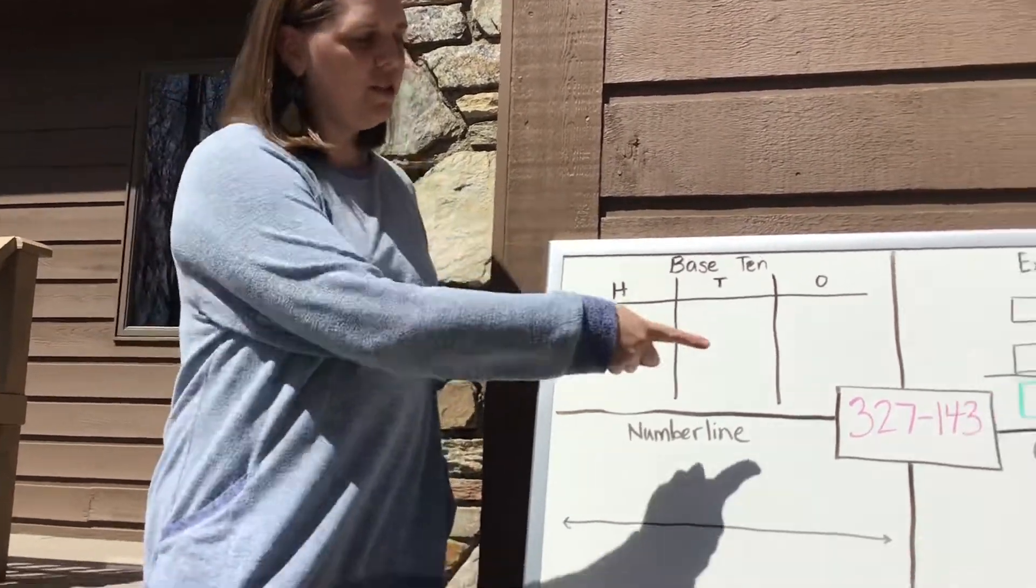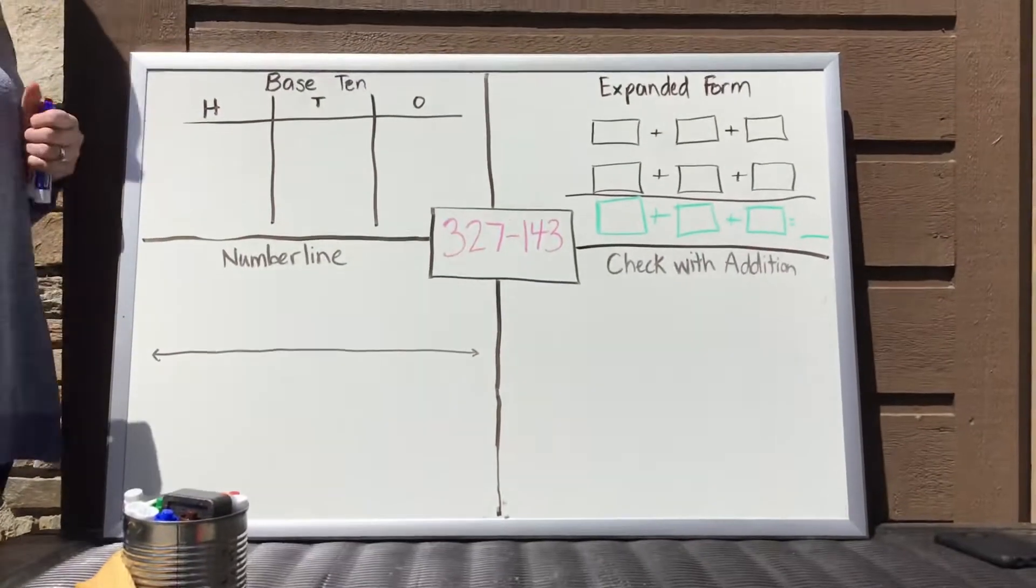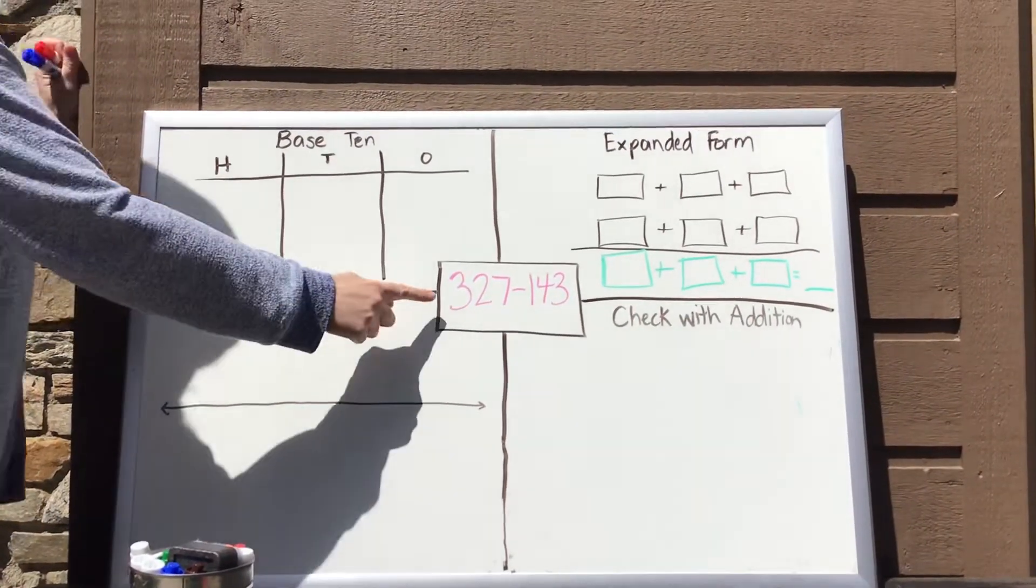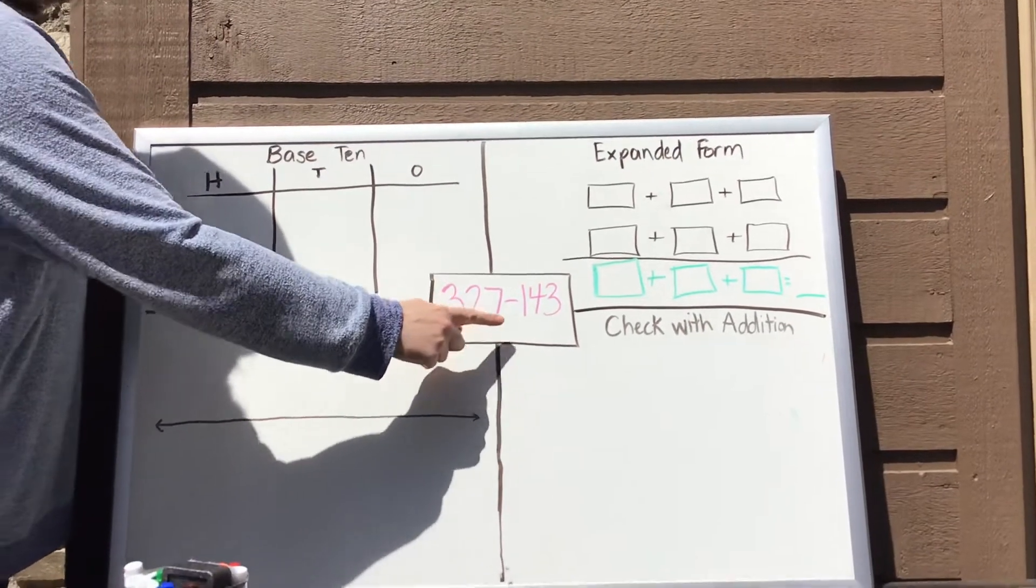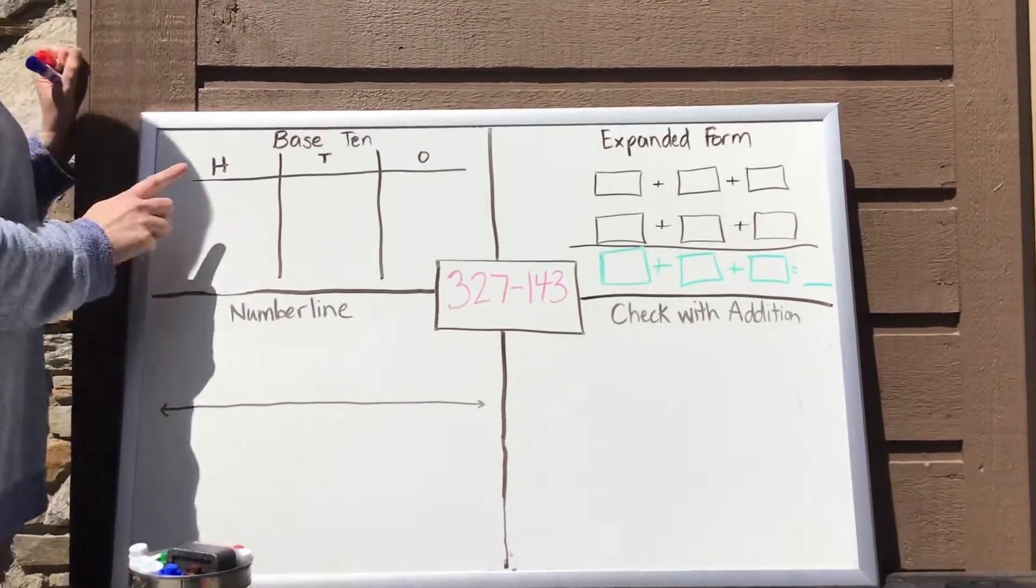Okay, so we're going to do a little bit of review, just a quick review of all the strategies that we've talked about this week for math for this problem: 327 minus 143.